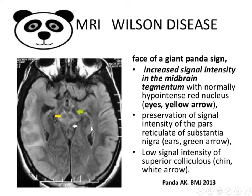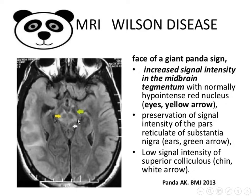So when the red nuclei are not involved in Wilson disease, they remain hypointense. Also, the preservation of signal intensity of the pars reticulata of the substantia nigra — it also remains hypointense — these form the ears of the panda. The low signal intensity of the superior colliculus forms the chin.